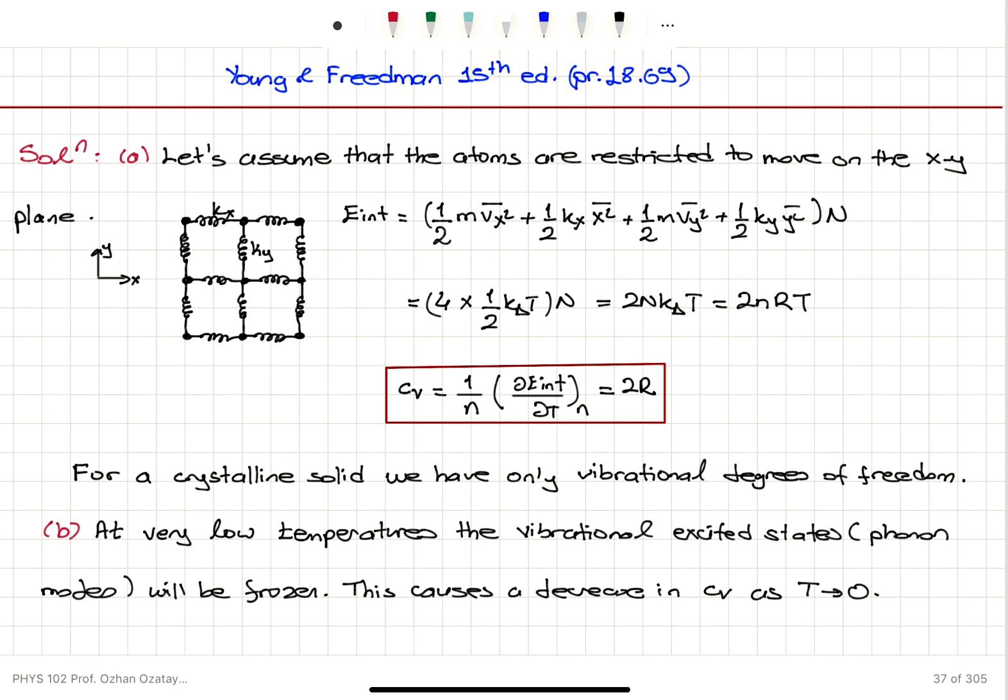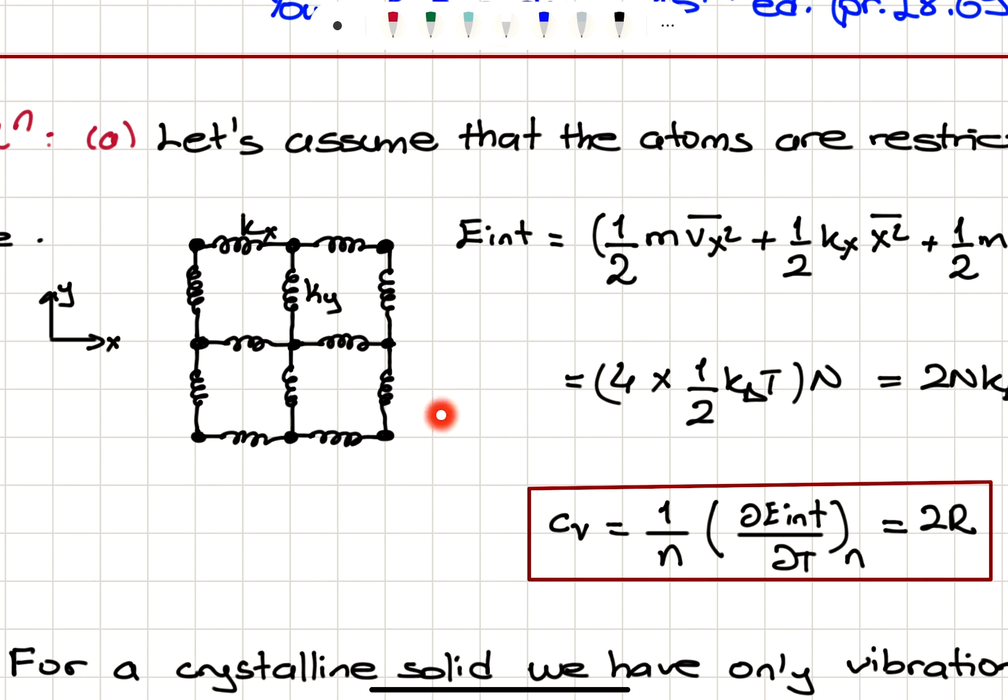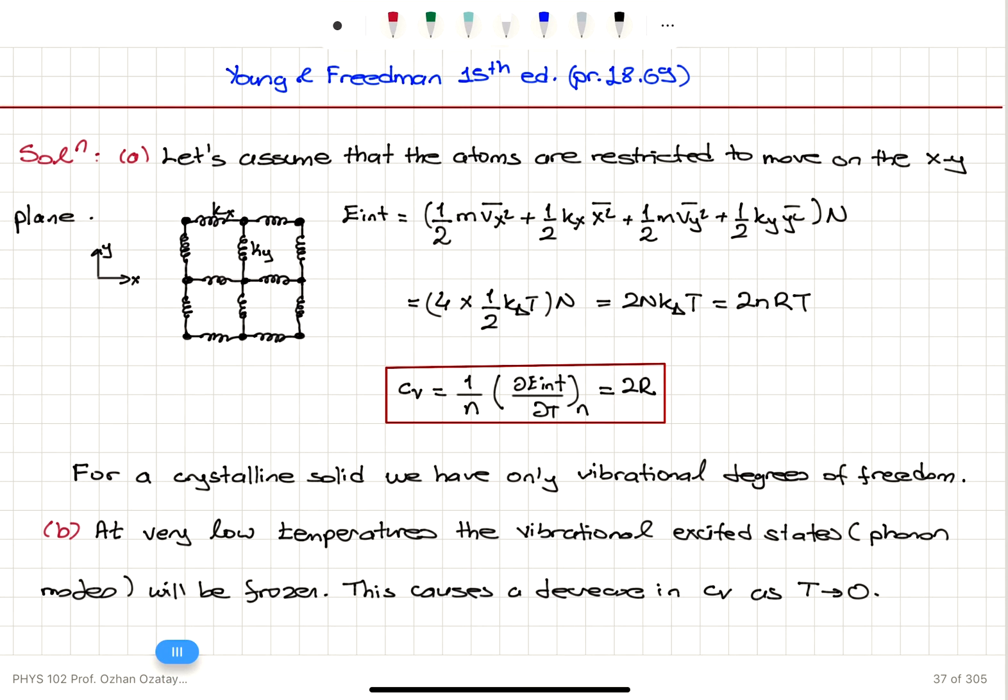We have a model for a two-dimensional crystal here. The atoms can only vibrate about their equilibrium positions on x and y axis. They cannot rotate about an axis that goes through the middle of a bond, for example. And they cannot translate freely. So we can only consider vibrations.